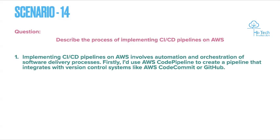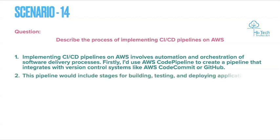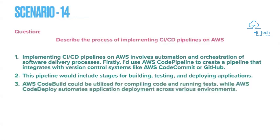First, I would use AWS CodePipeline to create a pipeline that integrates with a version control system like AWS CodeCommit or GitHub. AWS recommends CodePipeline for pipelines and CodeCommit for version control, though GitHub is also supported. The pipeline should include stages for building, testing, and deploying the application — build first, then test, then deploy.